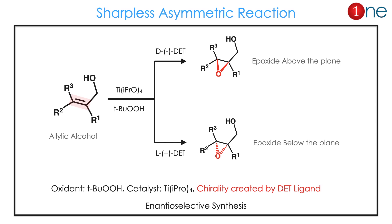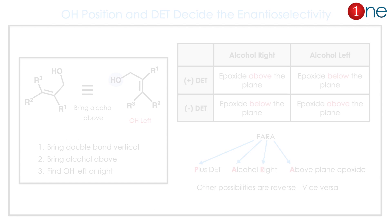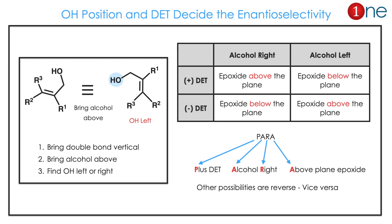The reaction is epoxidation of allylic alcohol. The catalyst is titanium isopropoxide and tertiary butoxide, and DET. Here DET is chiral and it is creating the enantioselectivity. The reaction is really about whether the epoxide forms above or below. The OH position and DET decide the enantioselectivity.